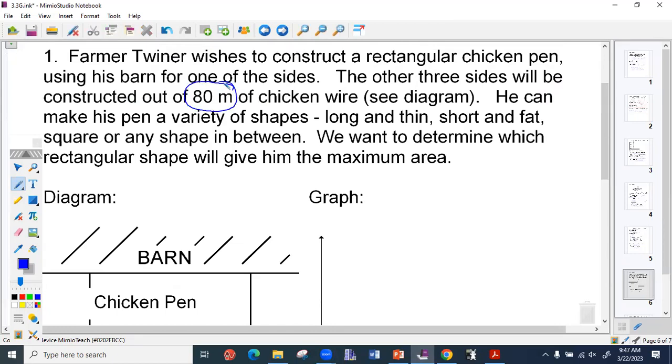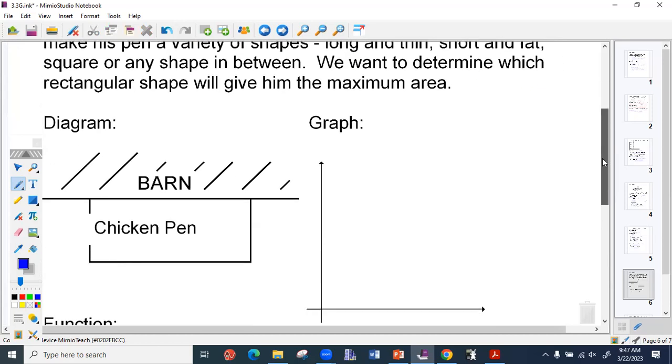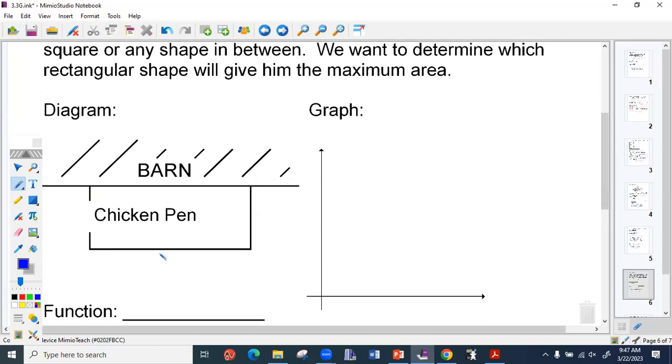In total, he has 80 meters to use to cover this side, this side, and that side. Two of them have to be the same, right? So my lengths are going to be the same, and my width is going to be its own.